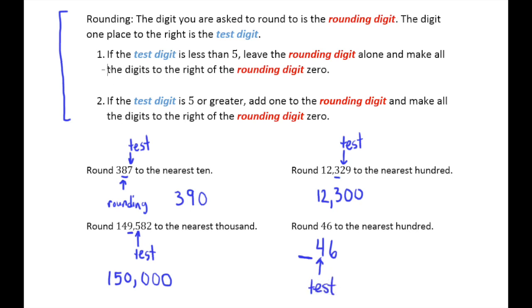So I go up to my rules here. The test digit is less than five. So it means we're going to leave the rounding digit alone. In other words, leave the rounding digit as zero. And then zero everything else out. So in the tens place, we put a zero. In the ones place, we put a zero. So 46 just rounds to zero when you round it to the nearest hundred.